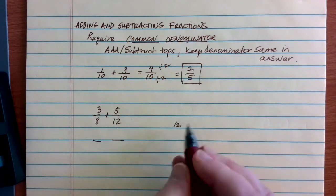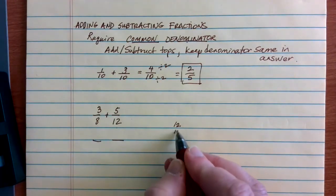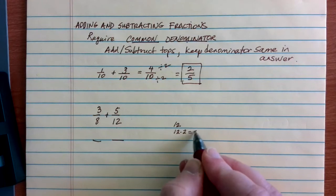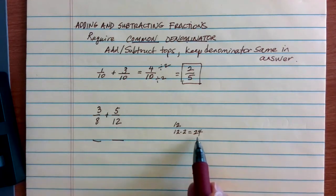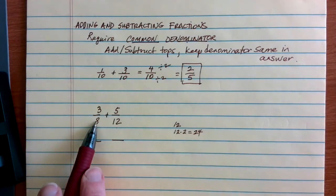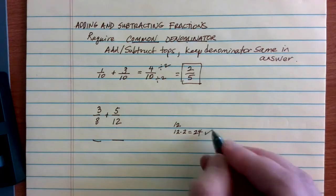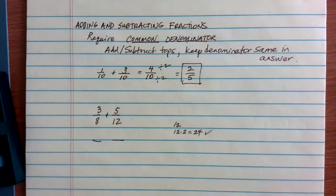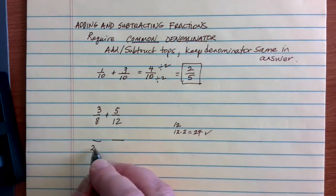I ask myself, does 8 go into 12 evenly? And the answer is no. So then what I do is I go up and I look at 12 times 2, which is 24. Then I ask myself, does 8 go into 24? In this case, 8 does go into 24 evenly, and so I can go ahead and use 24 as my common denominator.